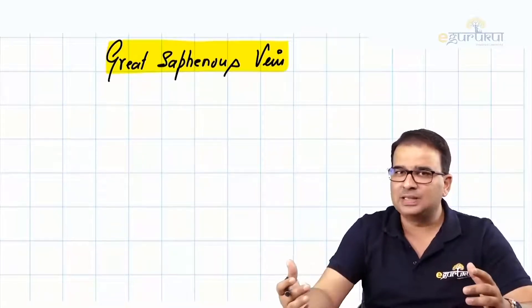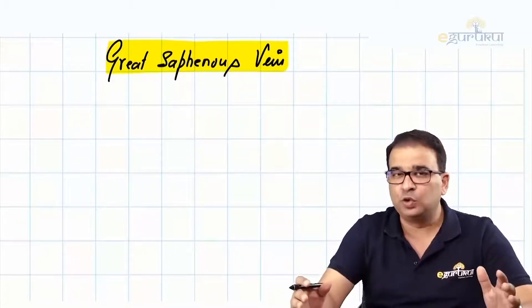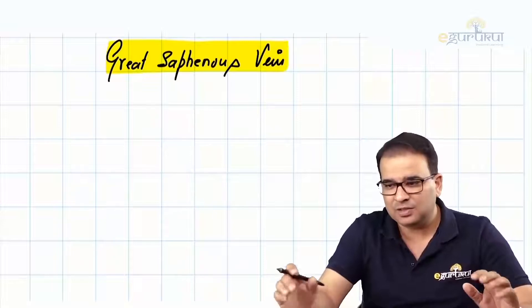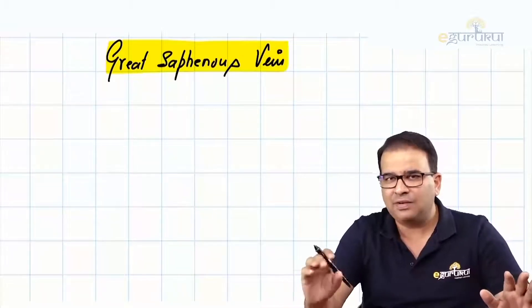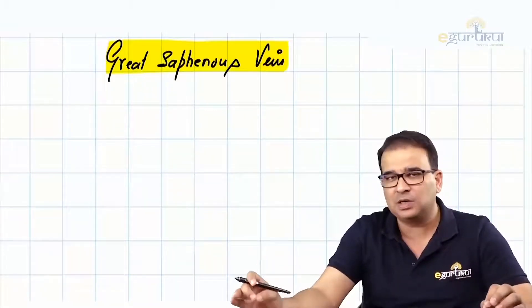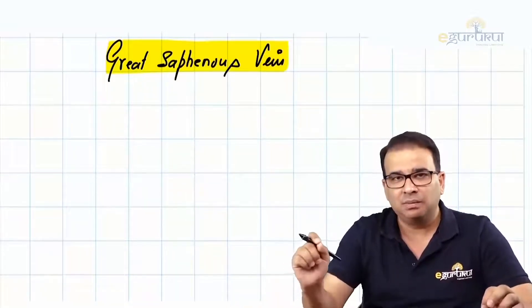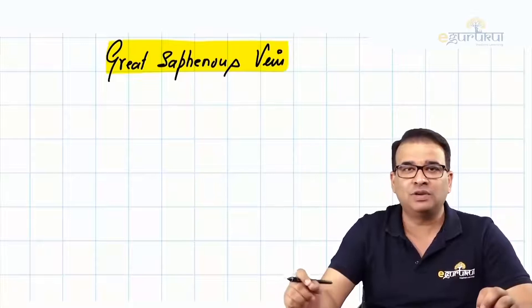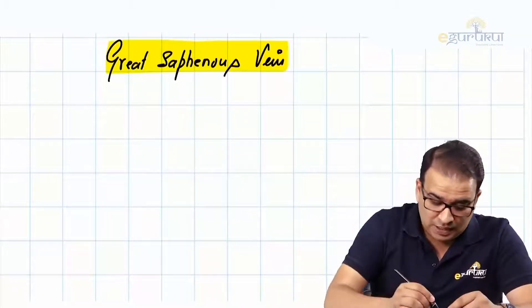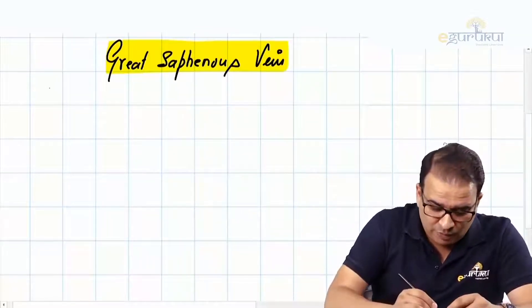We'll take the important relevant part of this vein. For every major vein in the body, as I already said, you should know first their formative tributaries. Make it a rule: anytime you're reading any major vein, make sure you talk about their formation - how they are formed. So the formative tributaries...